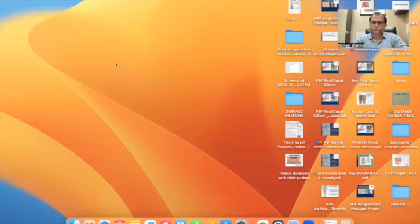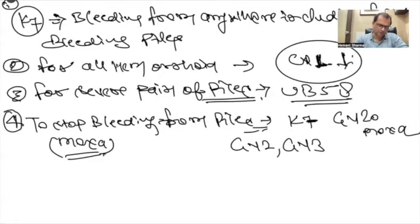So this is the formula to stop the bleeding. So remember, we learned the formula to reduce pain. We also learned how to stop the bleeding from the piles. Governing vessel 2-3 and governing vessel 20 moxibustion. Through these we can reduce the bleeding.